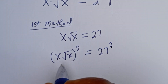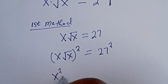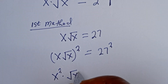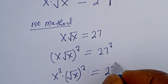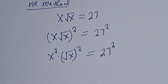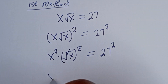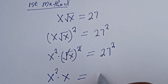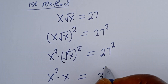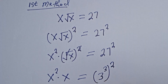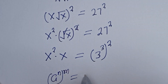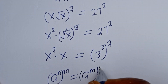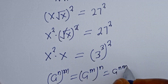Now, S times root of S, all squared, is equal to 27 squared. This gives us S squared multiplied by root of S all squared, which is equal to 27 squared. The square and the square root cancel, so we have S squared multiplied by S, which can be written as S to the power of 3 to the power of 2. Note that if you have L to the power of N, to the power of M, this equals L to the power of N times M.